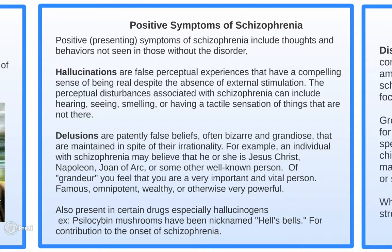One positive symptom is hallucinations — false perceptual experiences that have a compelling sense of being real despite the absence of external stimulation. These can include hearing, seeing, smelling, or having tactile sensations of things that are not there. In A Beautiful Mind, the main character essentially sees individuals who are not there.